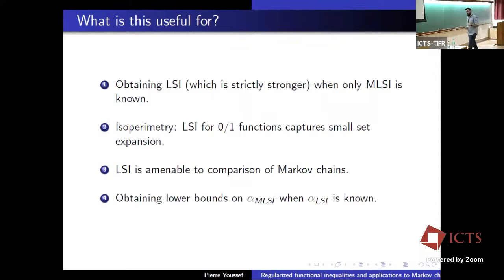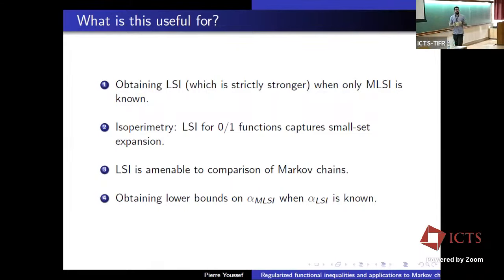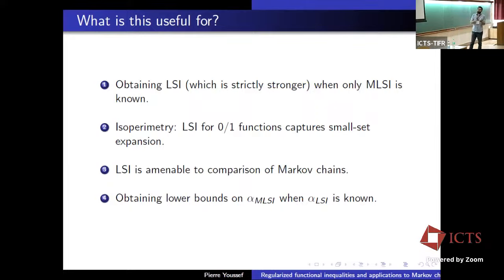Another advantage: if you know LSI for some chain in the literature, which only gives you an upper bound on the modified log-Sobolev constant, from our result you can actually get a lower bound on MLSI. So you can use the result in both ways — to get an upper bound on LSI, but also in reverse to get a lower bound on the modified log-Sobolev constant.